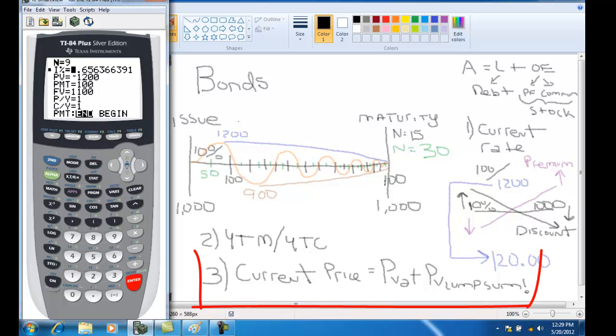The final calculation is the current price. Now, if we look closely, the current price calculation is nothing more than the present value of the annuities, which in this case would be $100, and the present value of lump sums added together. And the discount rate, or the rate we would discount it back to get this present value, would be the investor's yield, or yield to maturity.